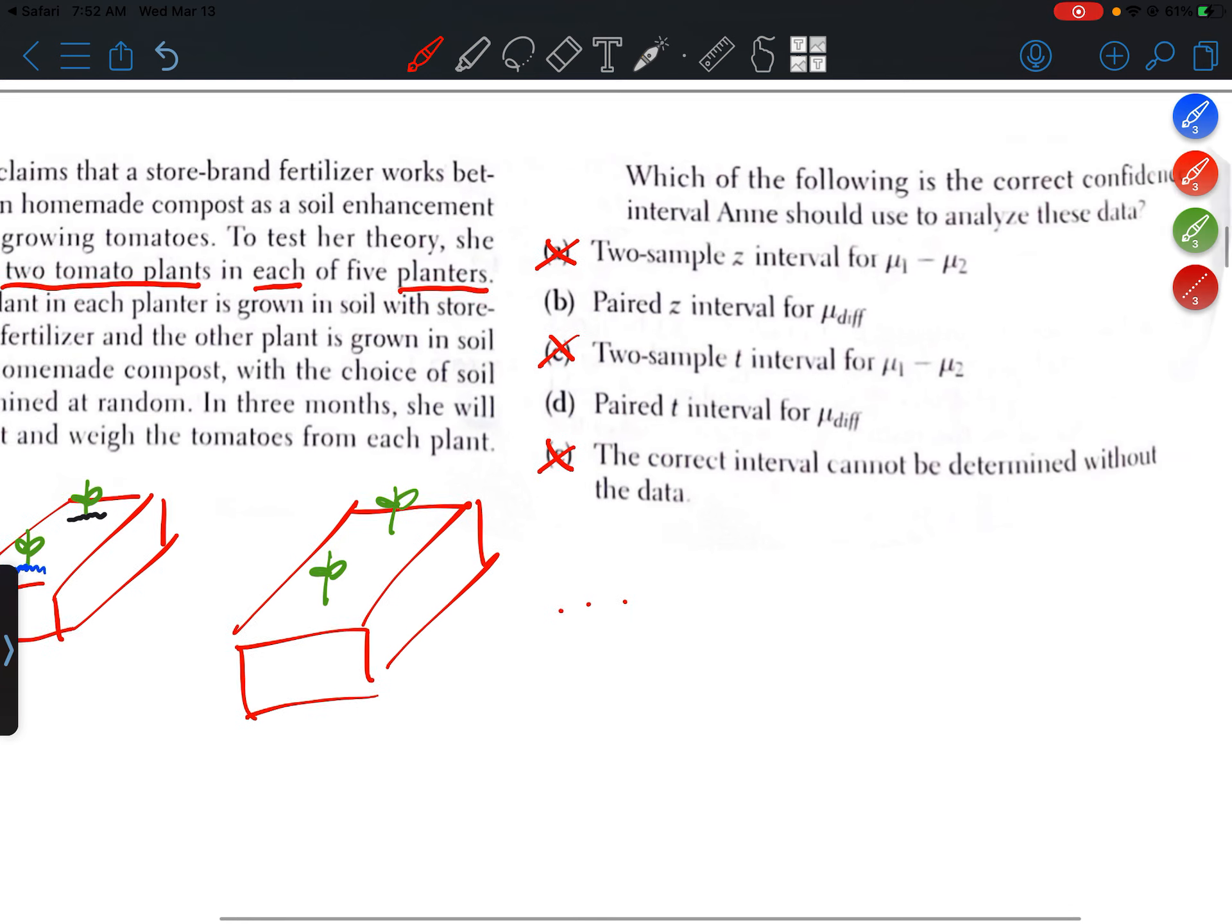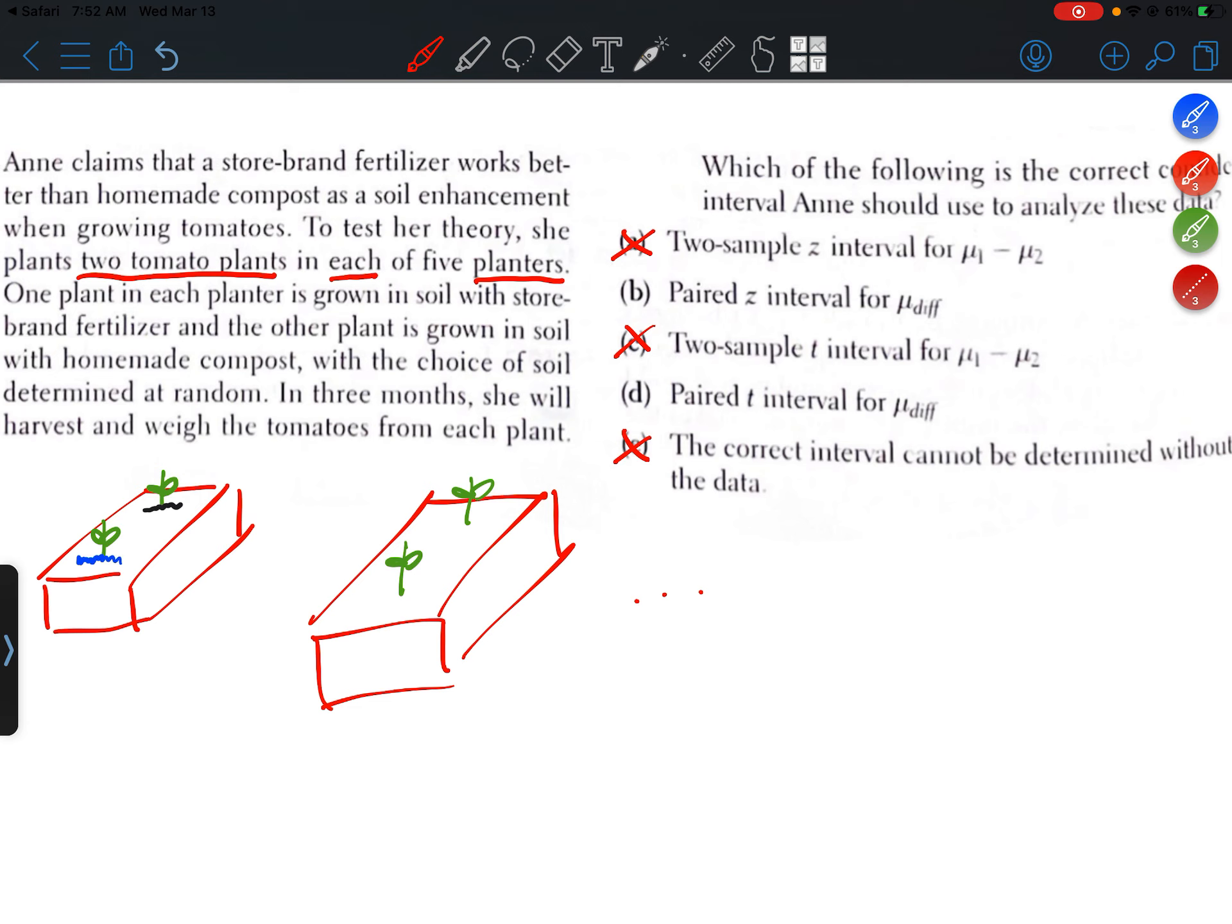Okay, so we can narrow it down to B or D because they both say paired. Now the difference between the two choices is that B talks about a Z interval, and D talks about a T interval.